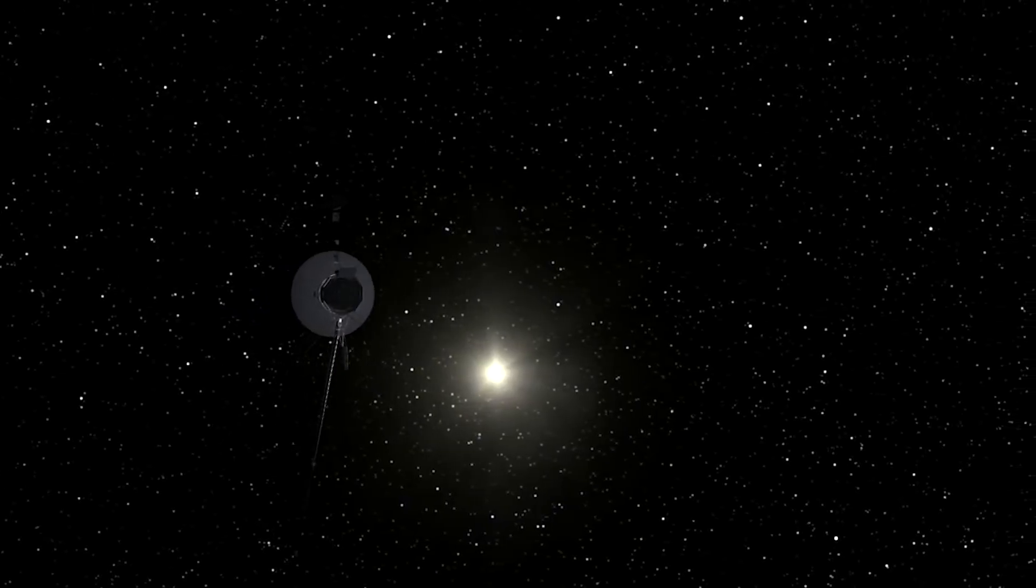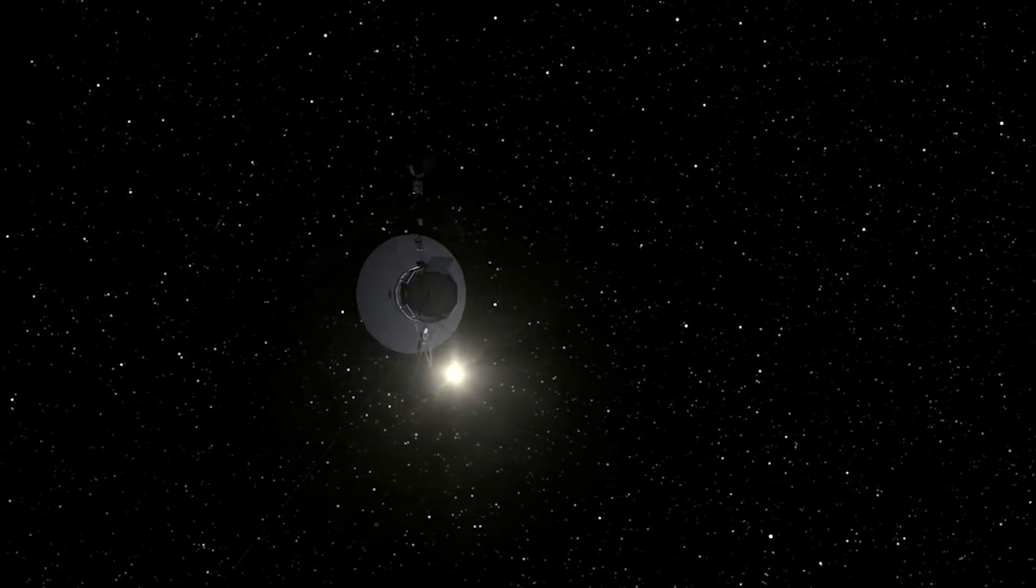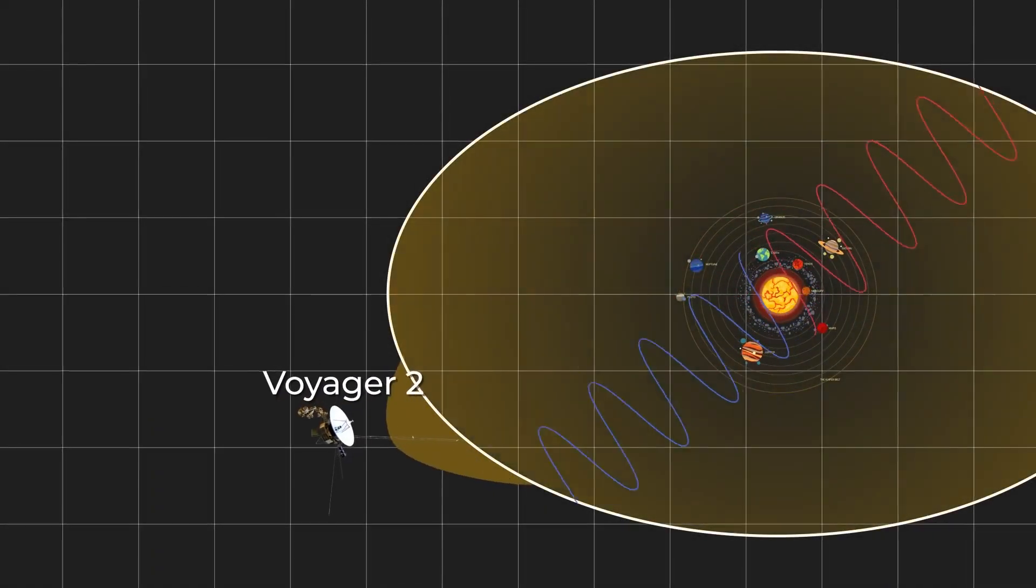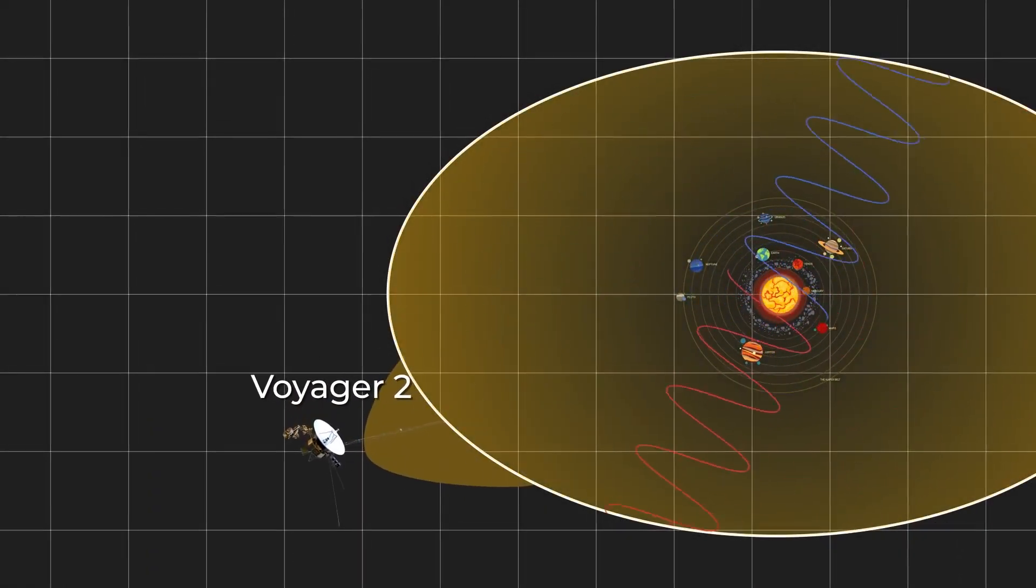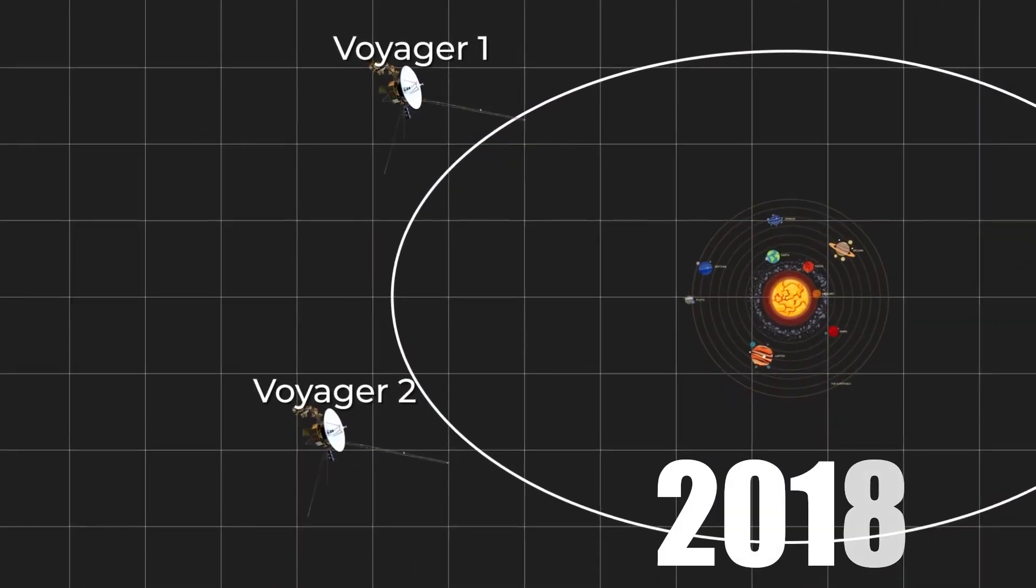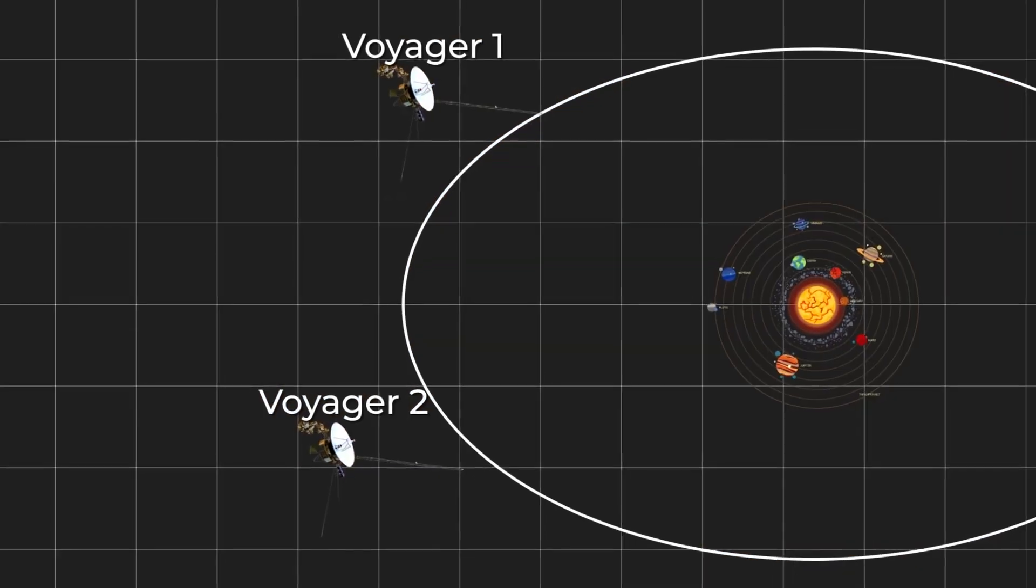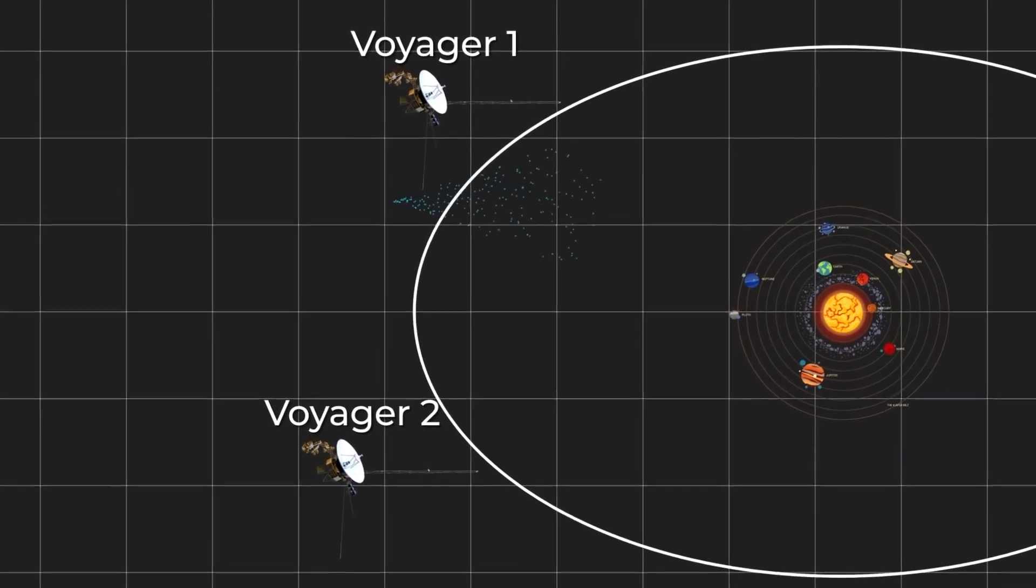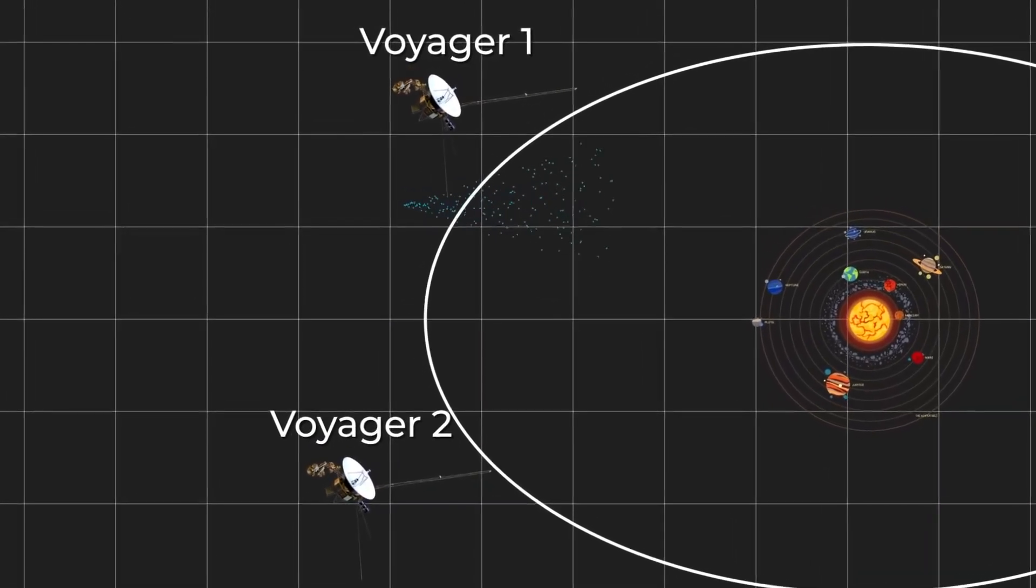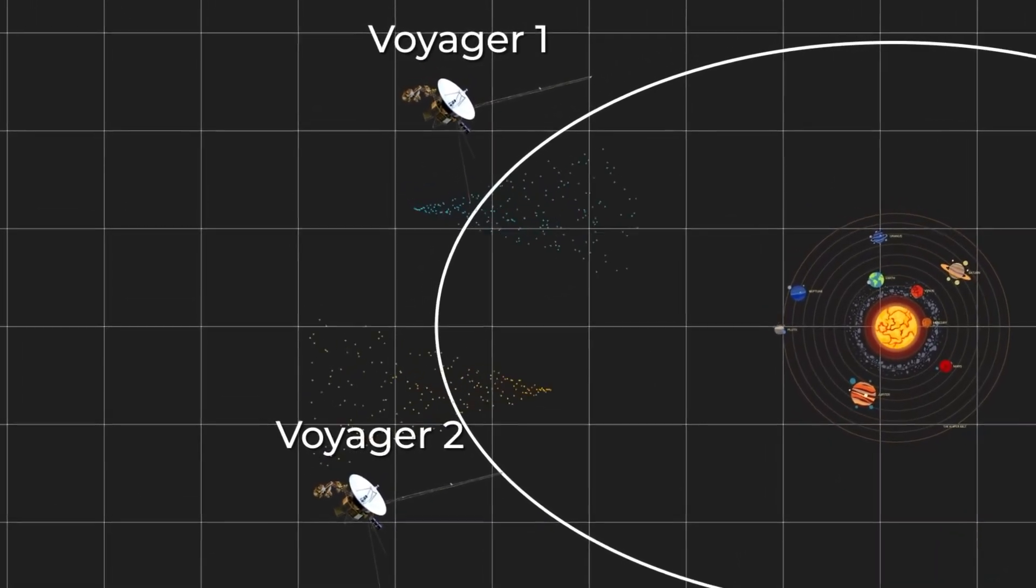The most convincing evidence for the heliopause's existence came in 2012. The signal proved that Voyager 1 had entered interstellar space. Despite this seemingly clear evidence, the anomaly wasn't isolated to Voyager 1. In 2018, Voyager 2, which is on a far different trajectory than Voyager 1, saw the same rapid drop in solar wind particles and spiking galactic ray particles.